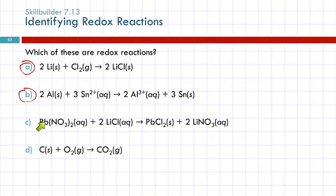How about this one? Here we have lead nitrate and lithium chloride, and they're forming lead 2 chloride and lithium nitrate. Is it something reacting with elemental oxygen? No. Is it a metal reacting with a nonmetal? No. Is there anything that suggests that electrons are being transferred? No. This, what kind of a reaction is this? It's a precipitation reaction. We have two aqueous solutions, and we're forming a solid. It's a reaction, but it's not a redox reaction.